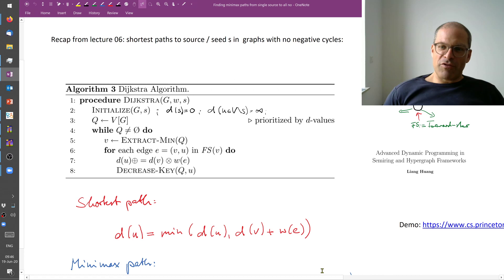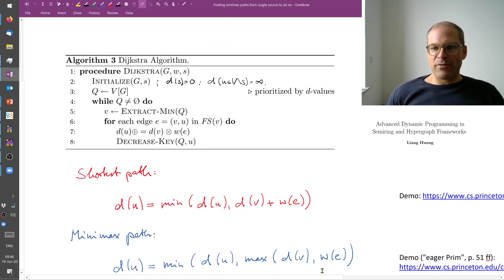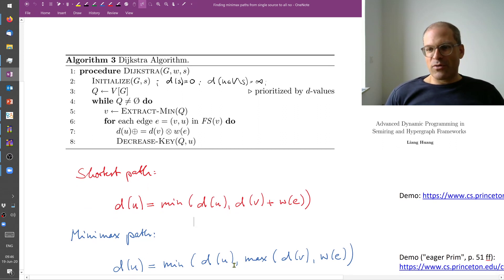Now for the minimax path we can use essentially the same algorithm with one difference. d of u was the cost of the best path we found so far and now we explore a possible new path, namely the minimax path from the source to node v and then we consider the edge from v to u.